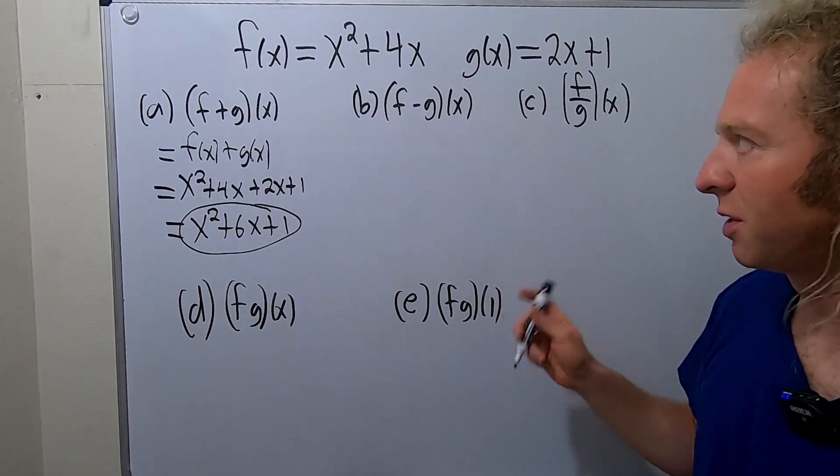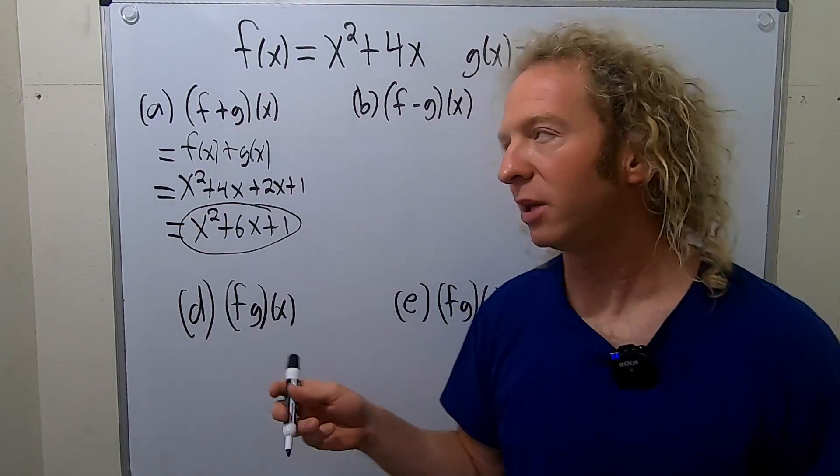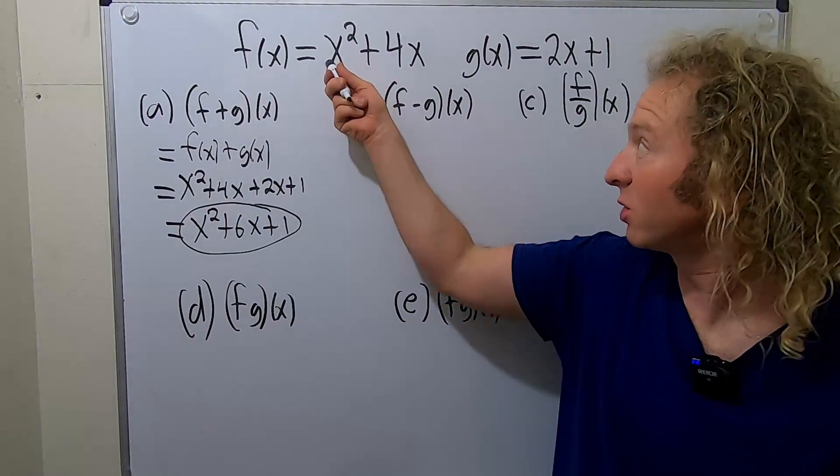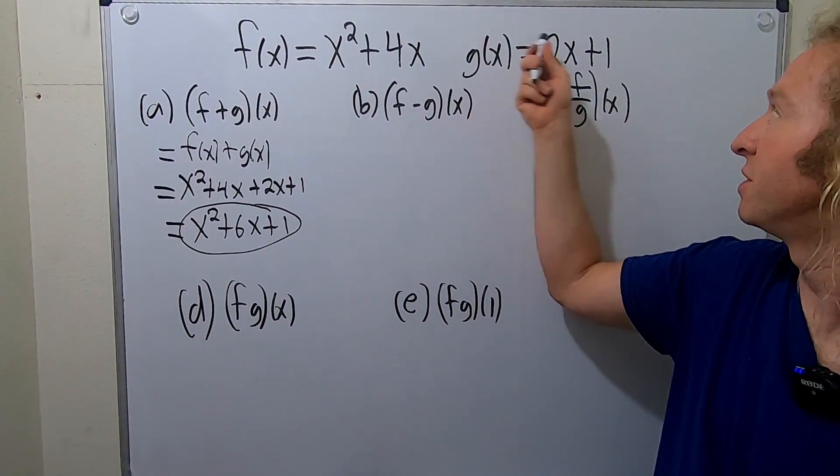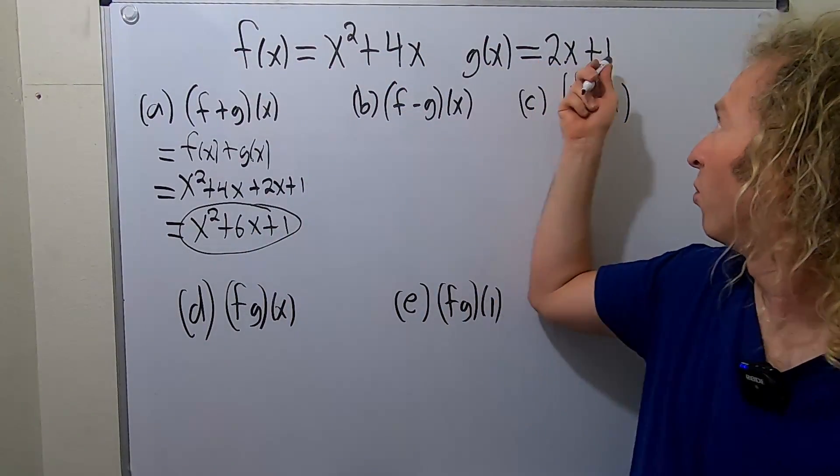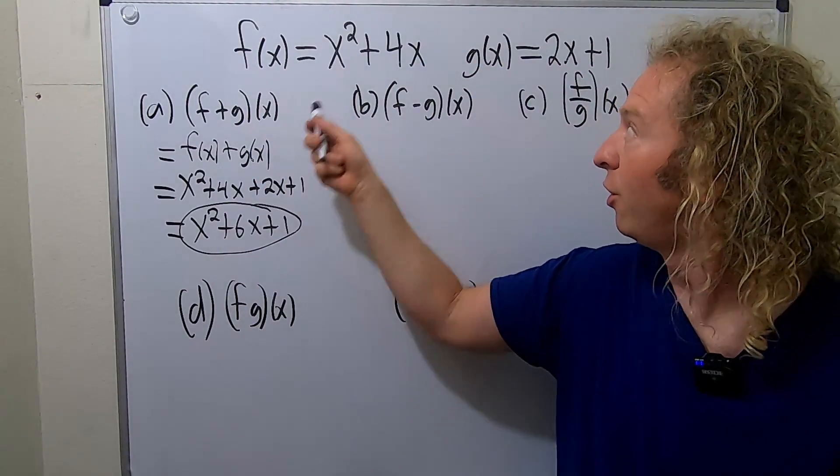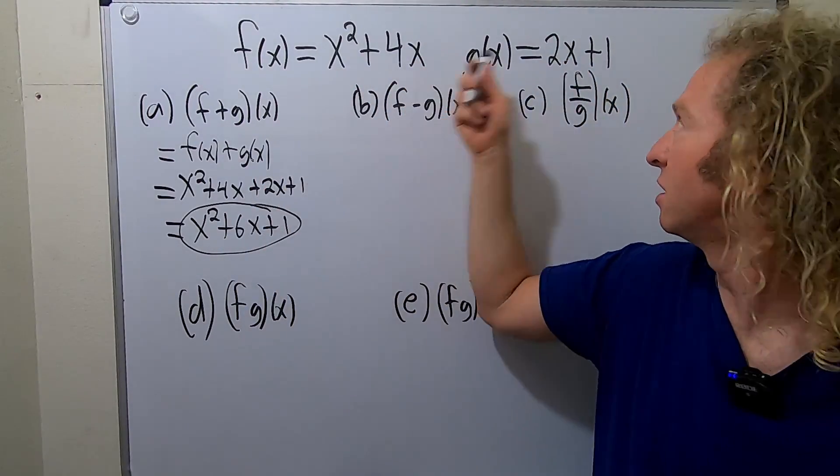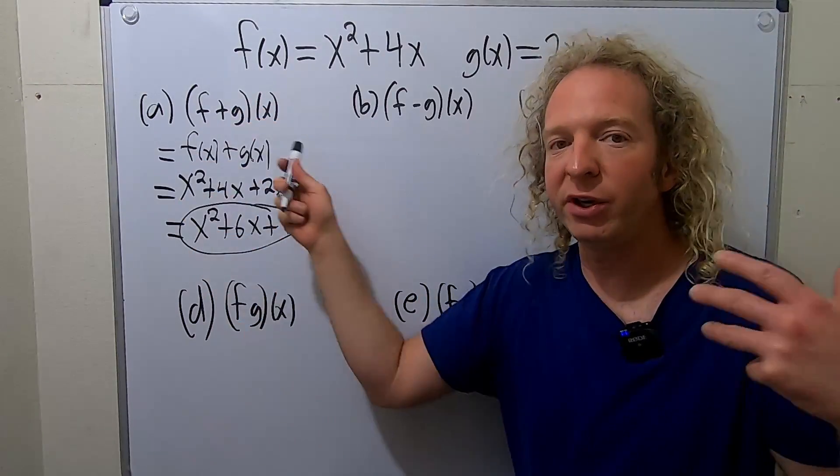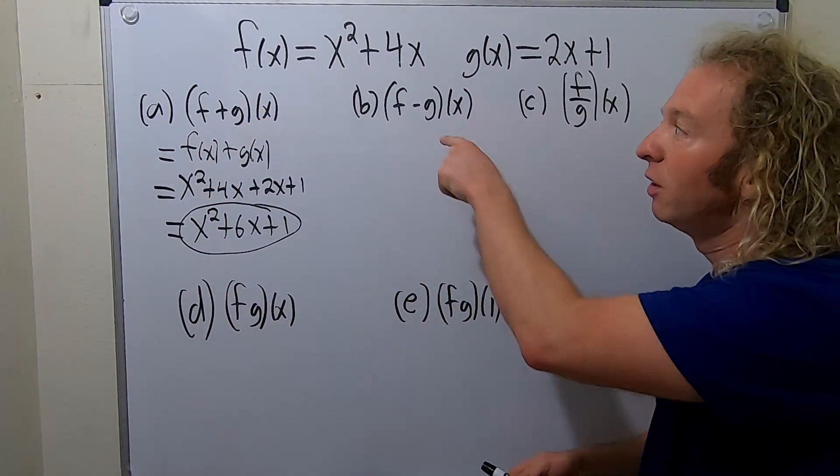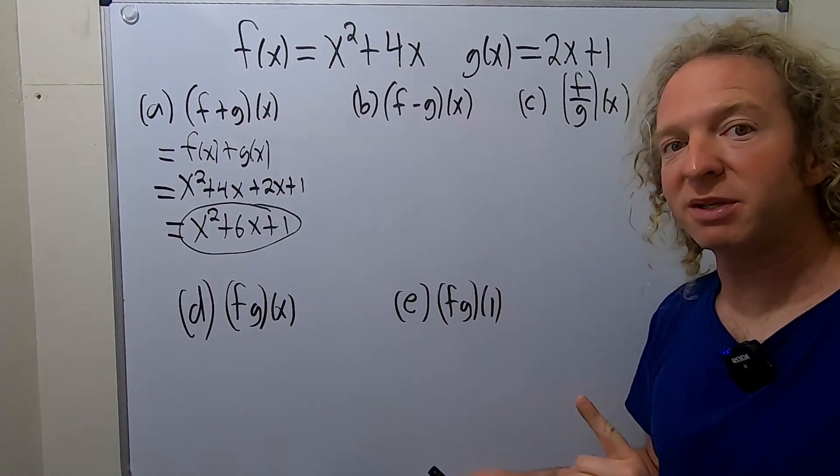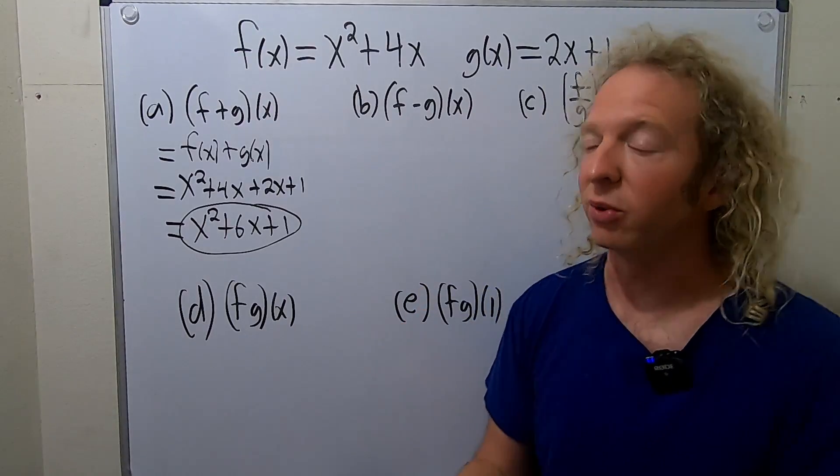Another way to do this problem, and I was going to do it this way when I first started doing it, is you just do it. So it's x squared, and then this plus this is 6x, and then 1. You just add them up. x squared plus this is just x squared. 4x plus 2x is 6x, and then you just have the 1. So you really don't have to show the work here. However, when you get to this one, it gets a little bit sneaky. So it's worth showing the work.